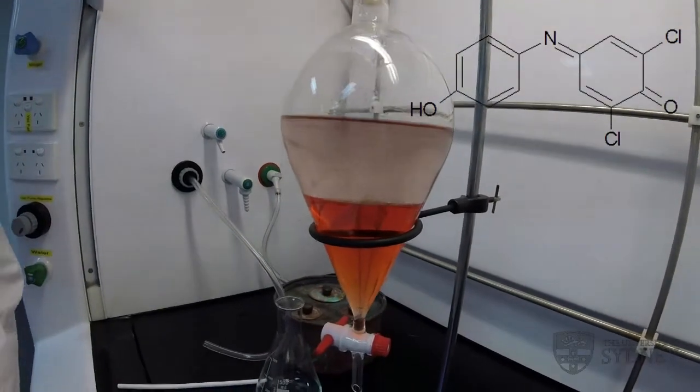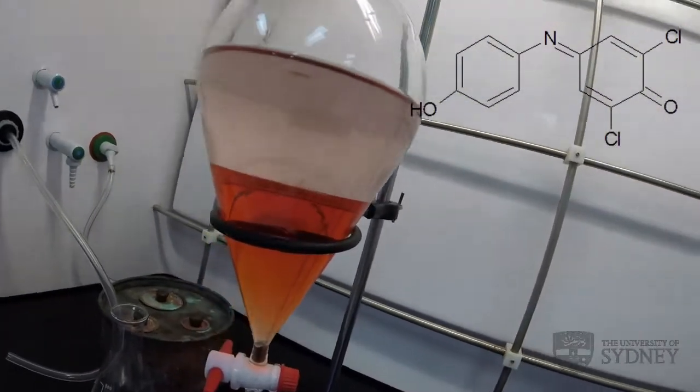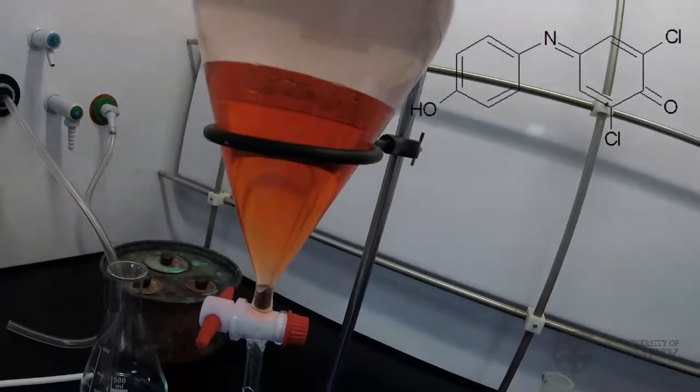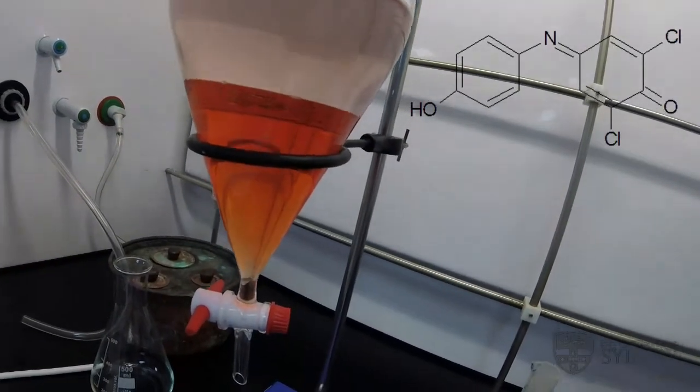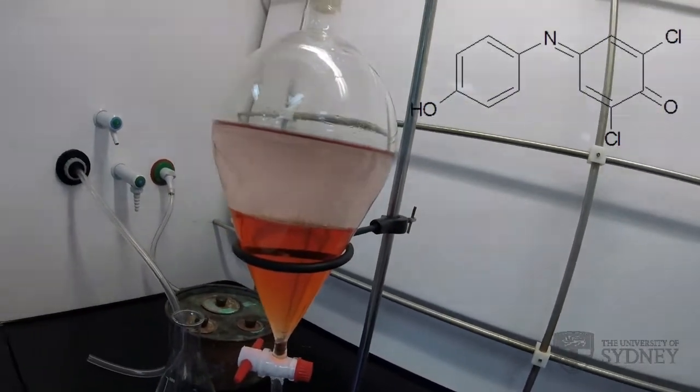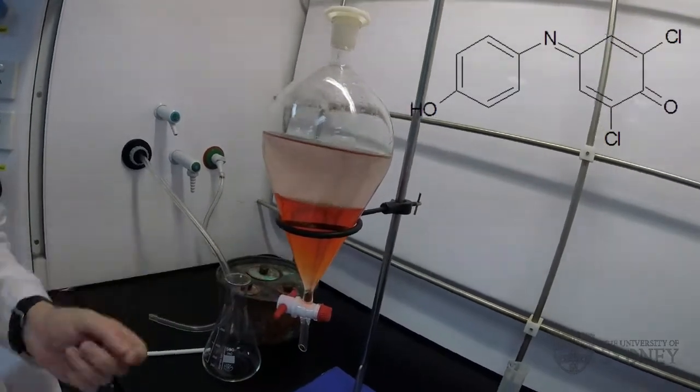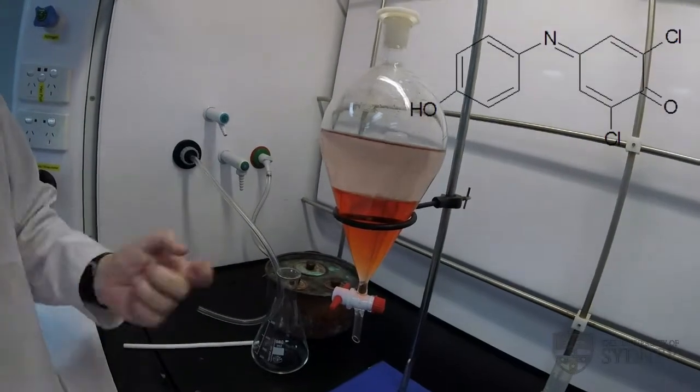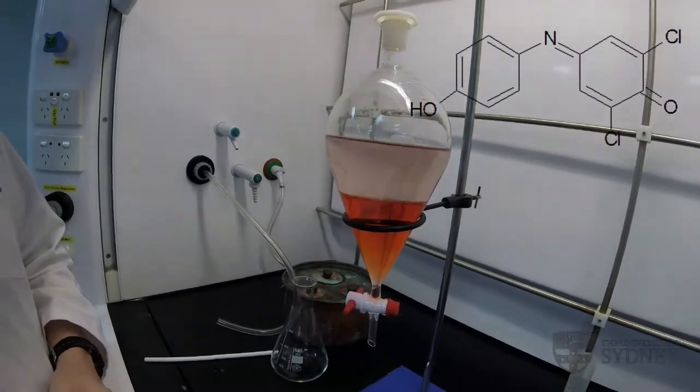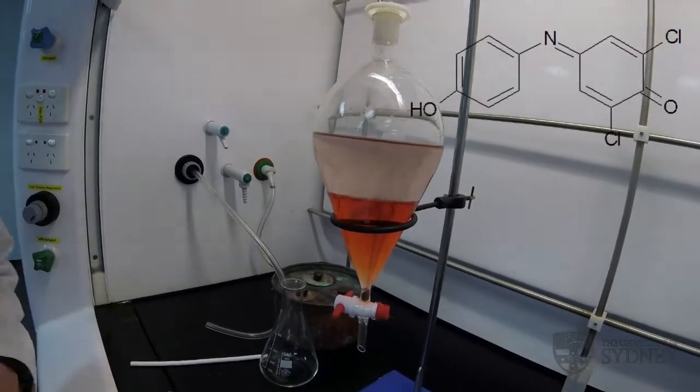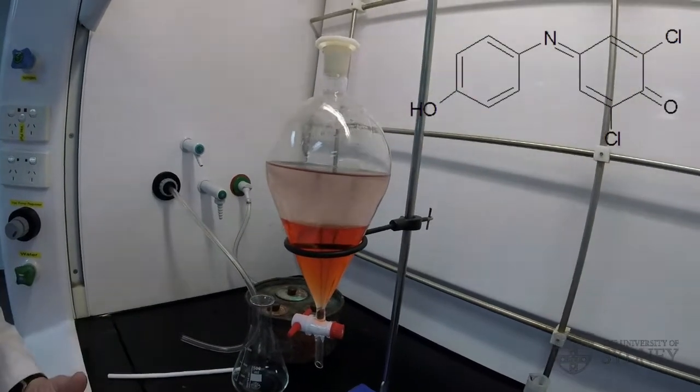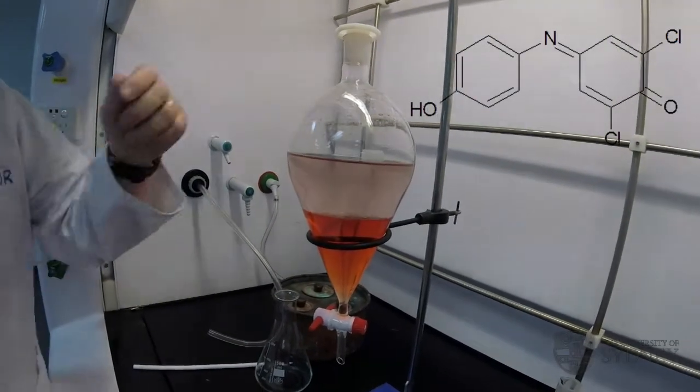Okay, so we've waited a few minutes and we can see that the top layer is almost clear. Now, if I really wanted to extract all of the dye into the organic phase and isolate it, I'd remove the bottom layer of liquid and then repeat that extraction with a fresh dose of chloroform. But we're not going to do that today. Instead, we're going to illustrate that we can go backwards and forwards with this separation.